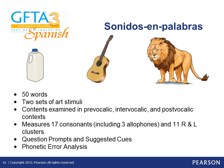The sonidos en palabras, which is the sounds-in-words test, includes 50 target words that were selected carefully to minimize lexical variations. For example, during standardization, the word carro was included but deleted for final publication because it elicited many lexical variations like carro, coche, auto, and automobile. Words that were specific to one particular geographical region or dialect were not included in the test.